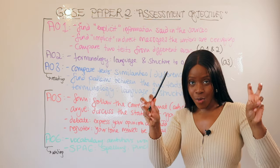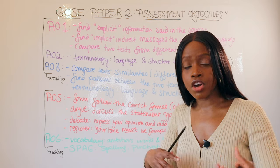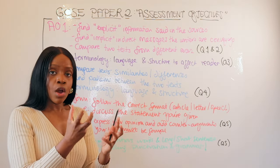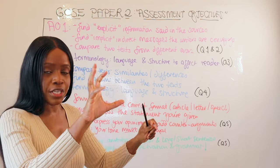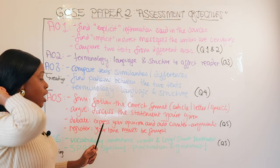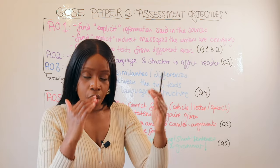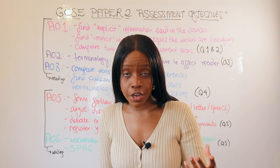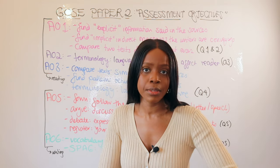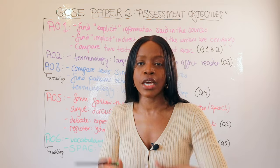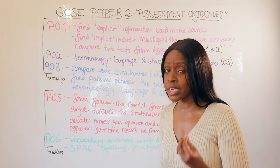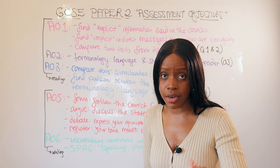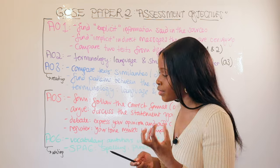Now let's talk about the final two AOs tested in Section B — the argument question. You're given a statement and must write an article, letter or speech arguing for or against it. AO5 tests several skills. Firstly, an awareness of form — are you able to follow the correct format for an article, letter or speech? It's really important to know how to lay each one out correctly. AO5 also tests your ability to argue: can you discuss the statement and show you have informed ideas about the issue you're asked to express a view on?